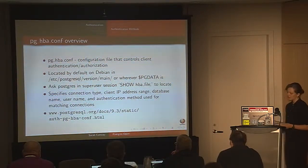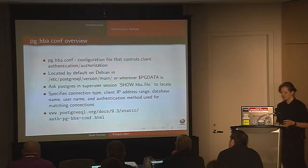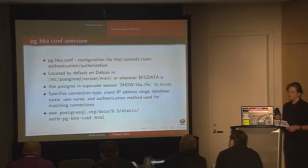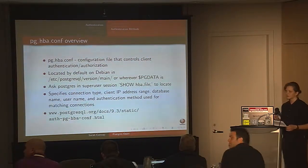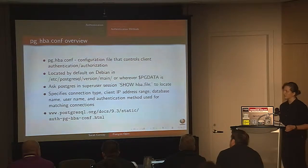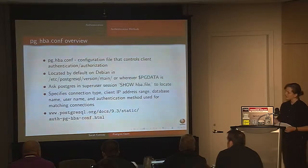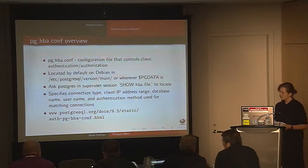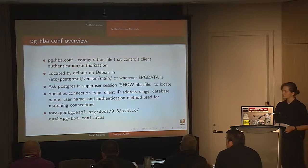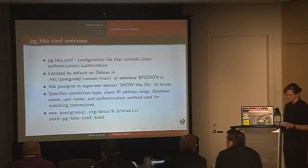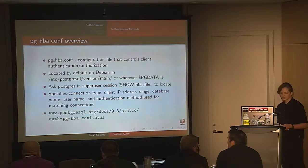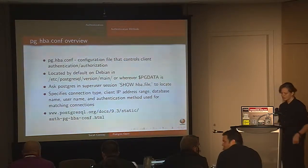Next up is pg_hba.conf. The official definition is that it's a configuration file that controls client authentication. However, I believe it would actually be an authorization method — reasons I'll go into shortly. It's located in pgdata, and you can always run 'SHOW hba_file' in a superuser session. It specifies the connection type, IP address range, database name, username, and authentication method used for connections that match.